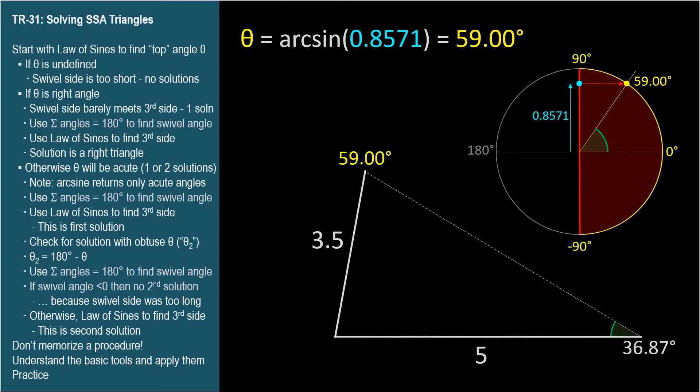But let's look closely at this unit circle and see if there might be another angle whose sine is 0.8571. Yes, this obtuse angle in quadrant 2 also has a sine of 0.8571.